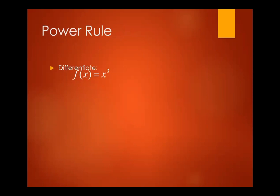Power rule example: the derivative of X to the power 3. N is 3, so we get 3X to the power 3 minus 1, which gives us 3X squared. Another: Y equals X to the power 9, so Y prime — the derivative of Y with respect to X — is 9X to the power 8.